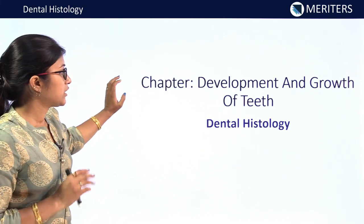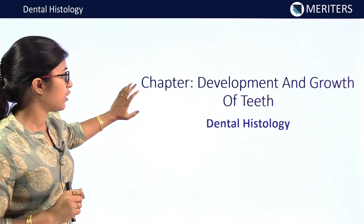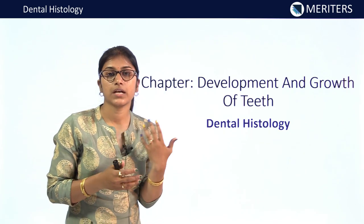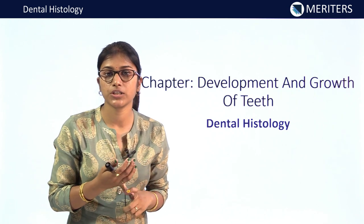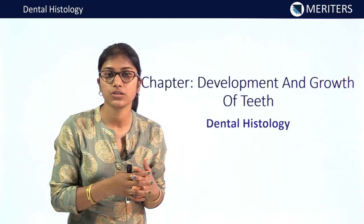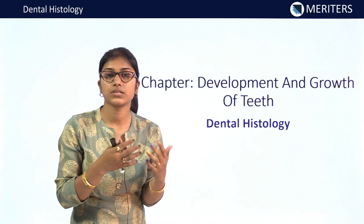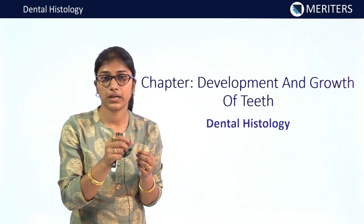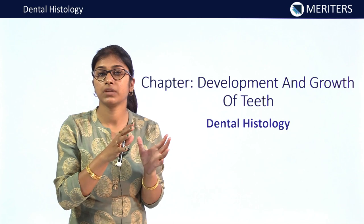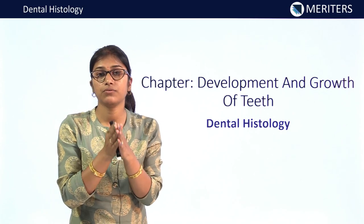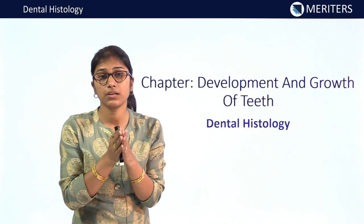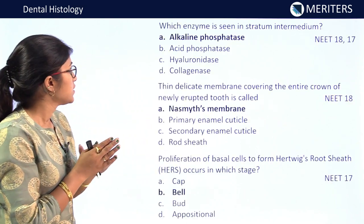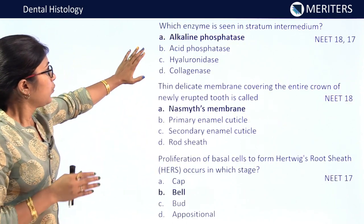We will start with the chapter 'Development and Growth of Teeth.' Generally, questions are asked from the stages, morpho-differentiation, histo-differentiation, aberrations of these stages, and also specific structures like stratum intermedium — which are characteristic for each stage.